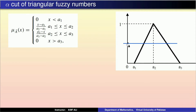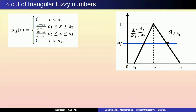Alpha cut میں ہم ایک horizontal line draw کرتے ہیں جس کی value alpha ہے۔ یہ line دو points پر intersect کرتی ہے: ایک (x − a1)/(a2 − a1) کی line پر اور دوسری (a3 − x)/(a3 − a2) کی line پر۔ ہم ان دونوں points کے corresponding x values find کریں گے۔